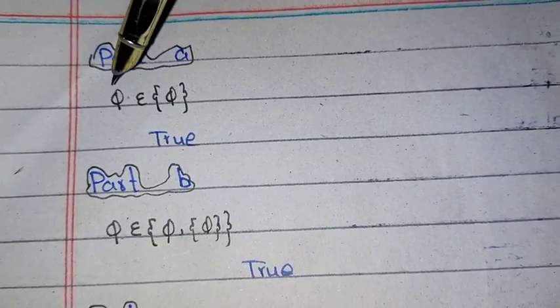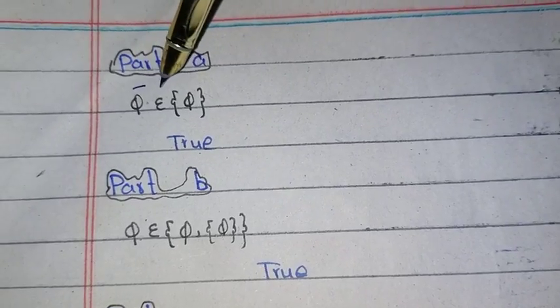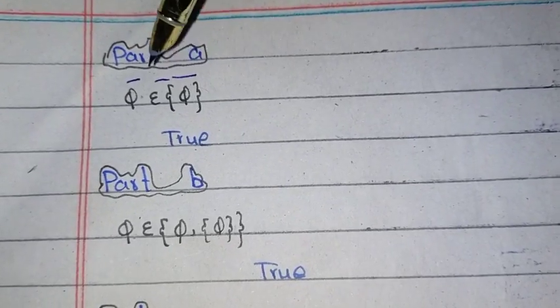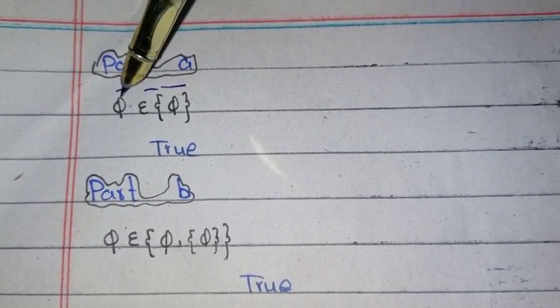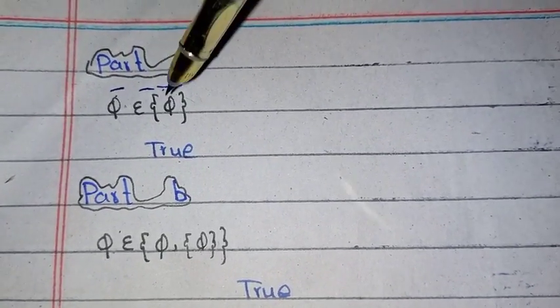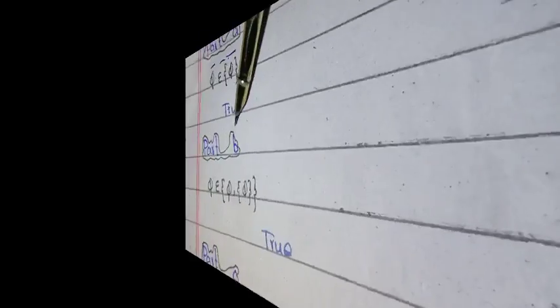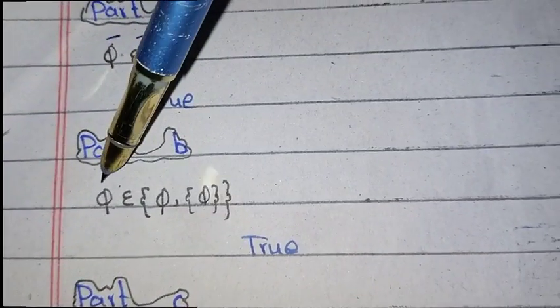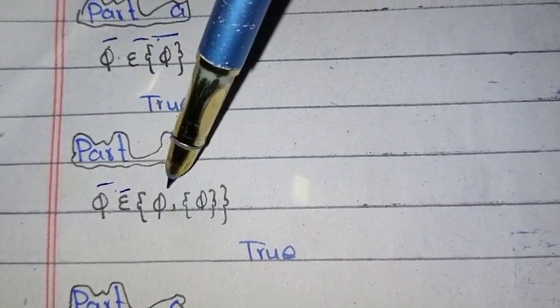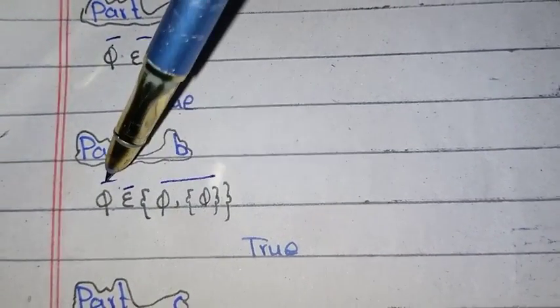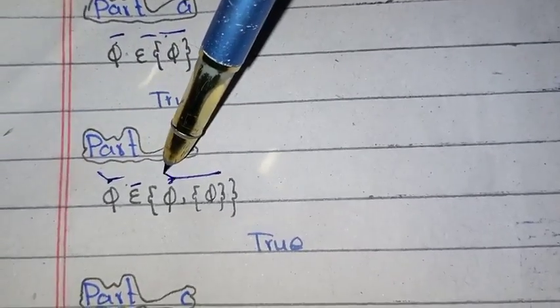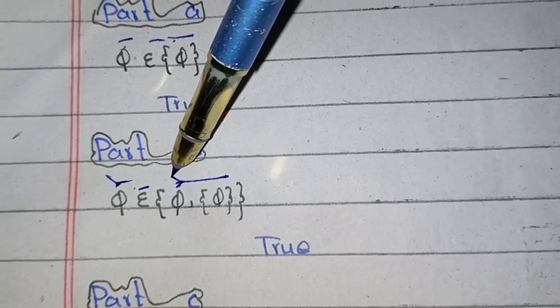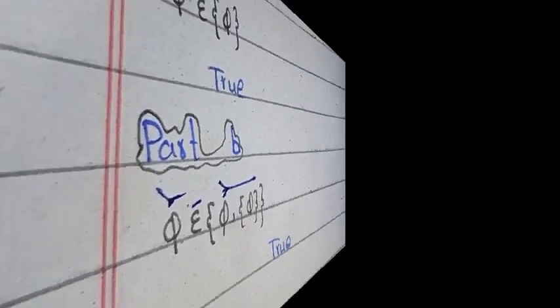Part A: this element is an element of this set. That is true because this is our element of this set. Part B: this is an element of this set. This element is in this set, so that is true.